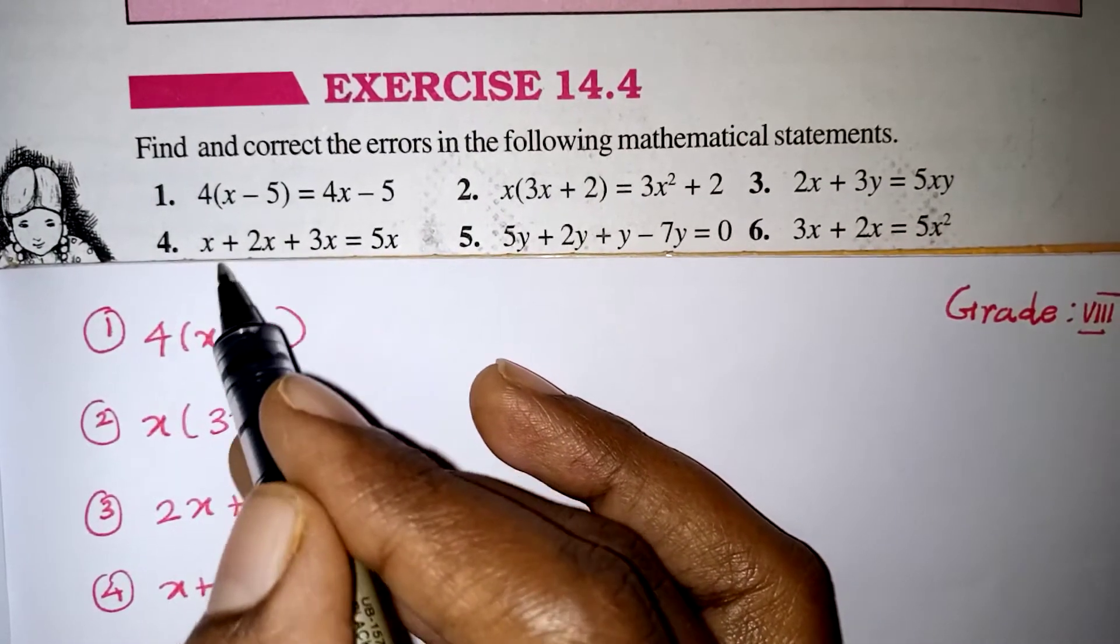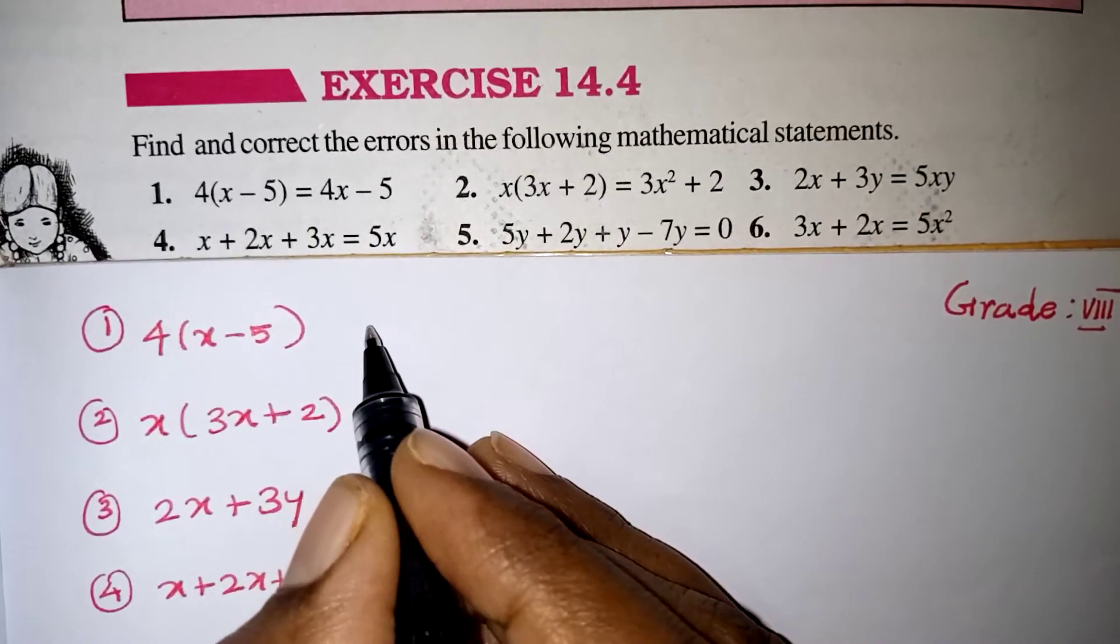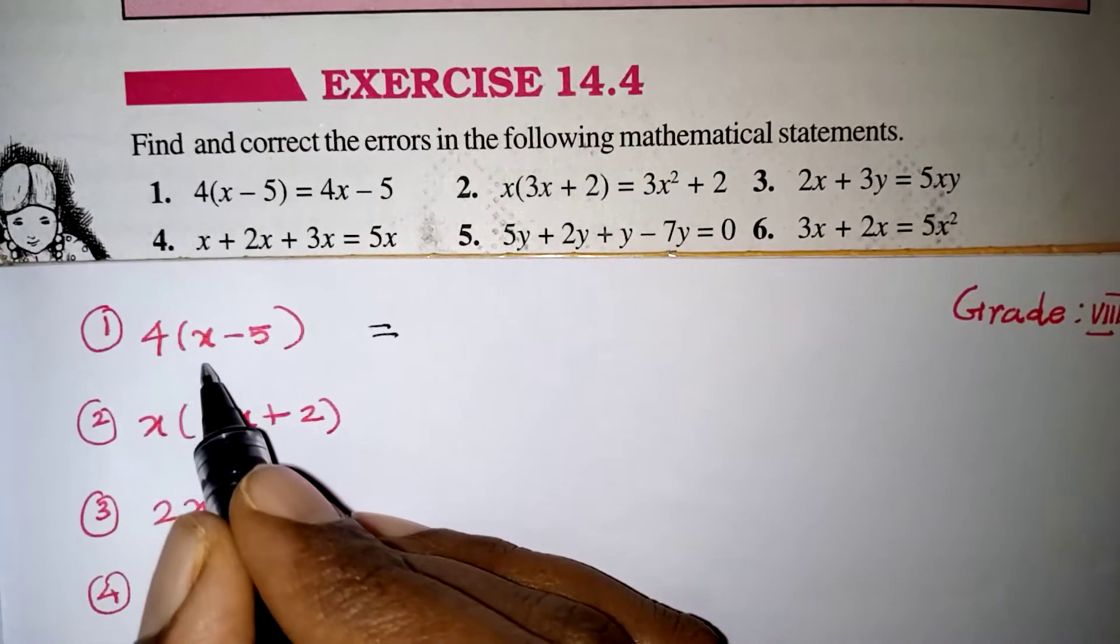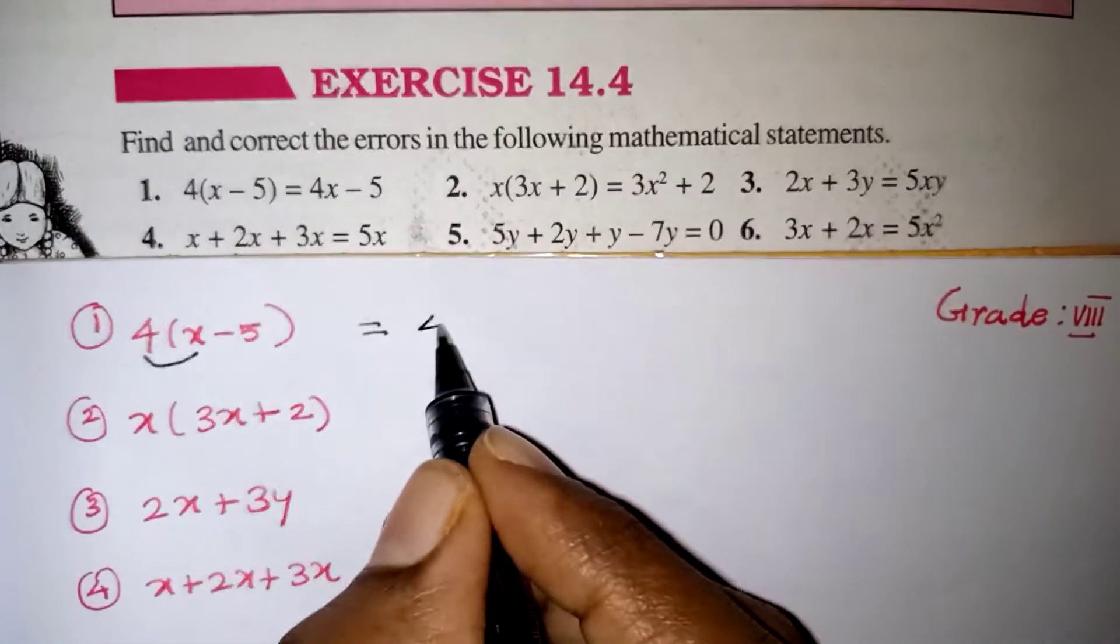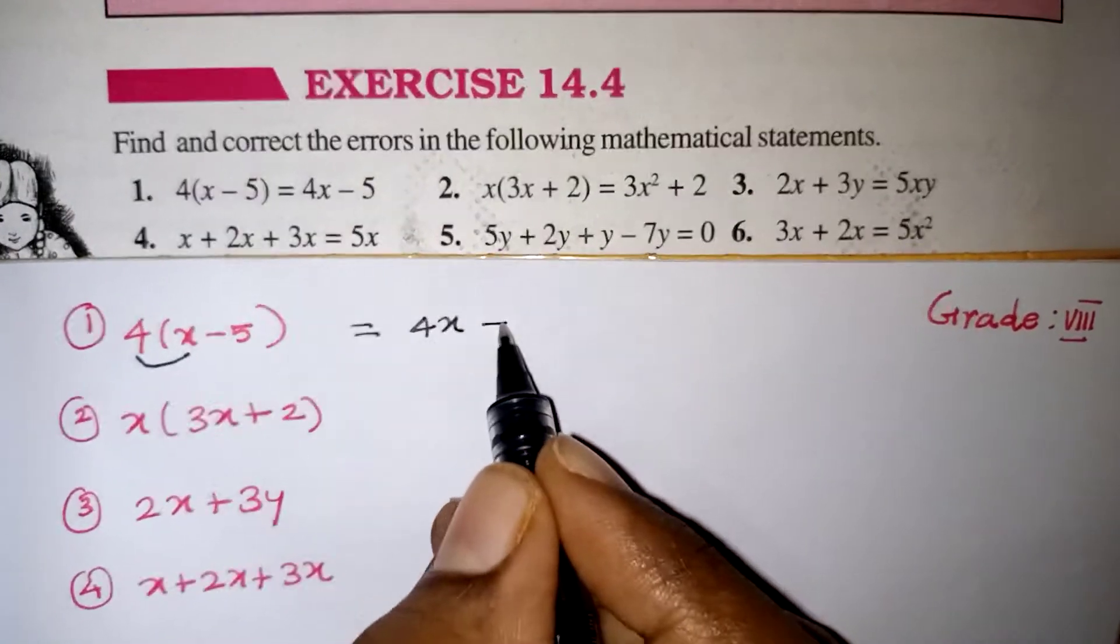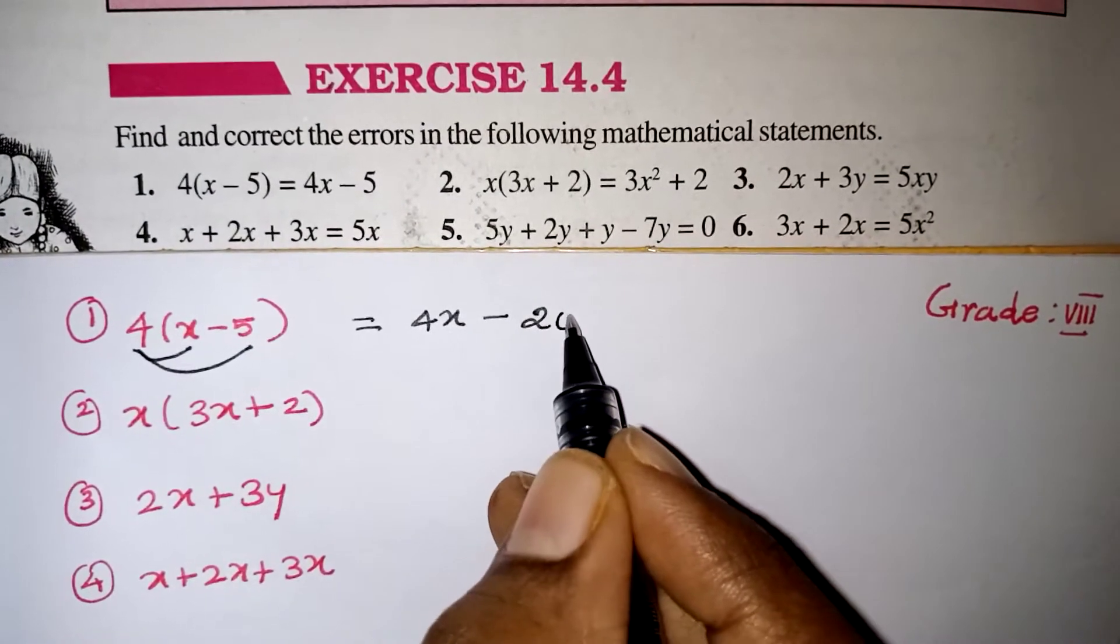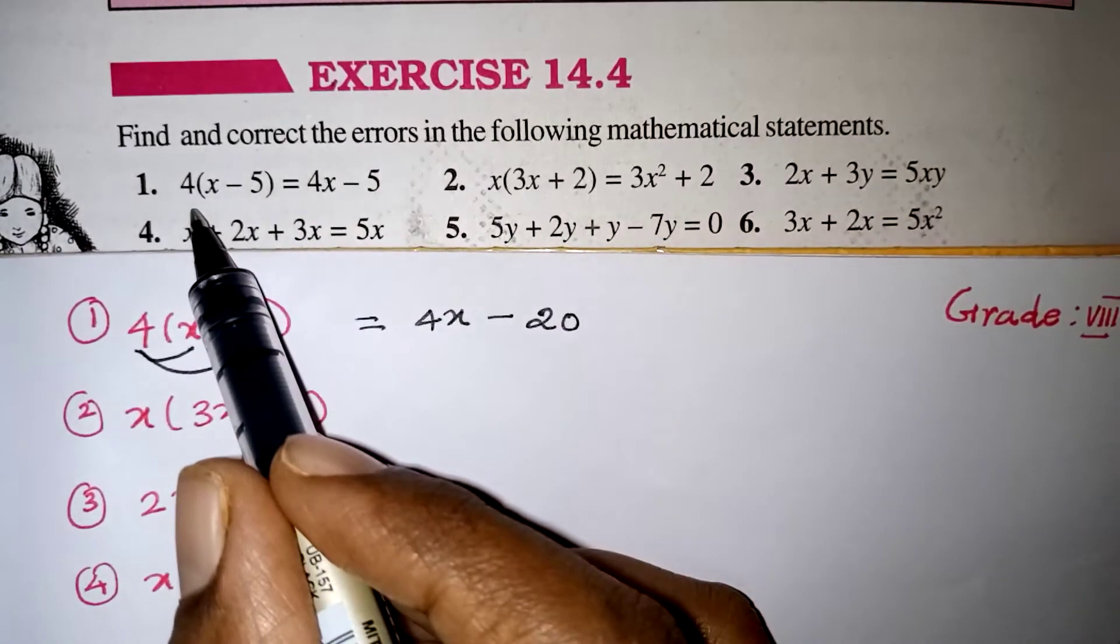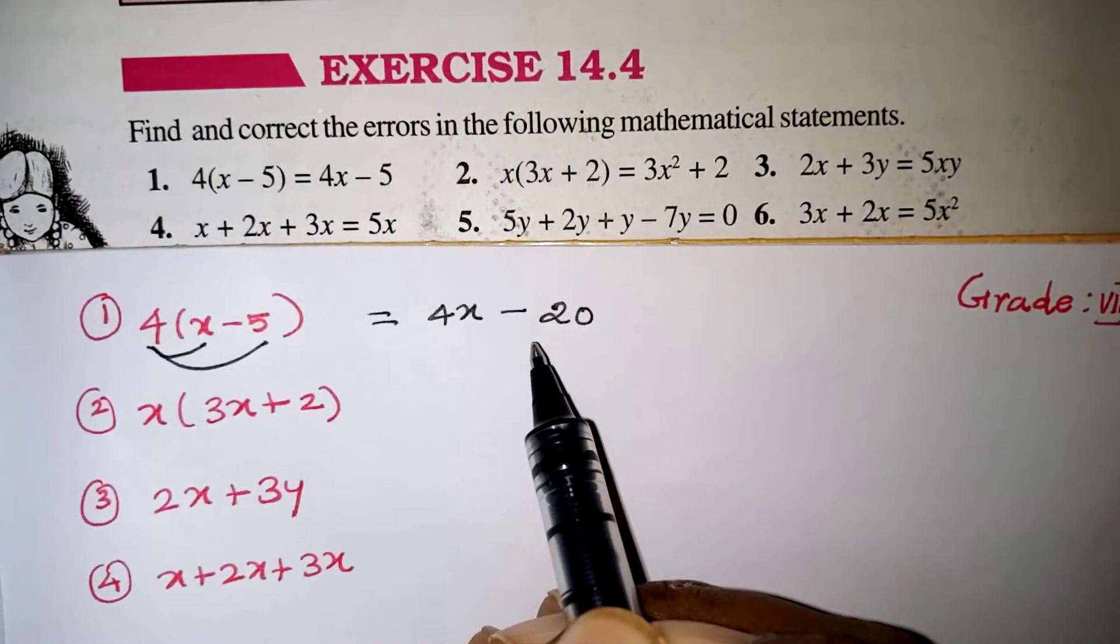Look at the first problem: 4 into x minus 5 is the question. If we expand this one, this 4 is given outside. When you are multiplying inside, that 4 is common for both the terms. 4 into x will be 4x and this minus symbol and 4 times 5 will be 20. 4 times 5 is 20 should come. They have given us wrongly 5 because the 4 is multiplied with only x not with 5. So this is wrong. This is the correct statement.